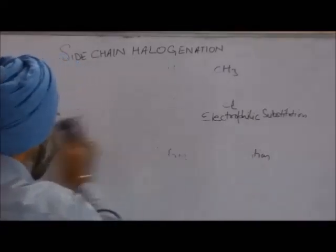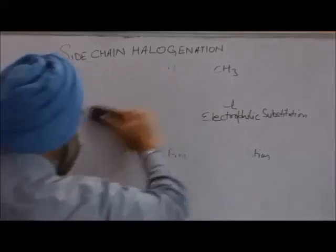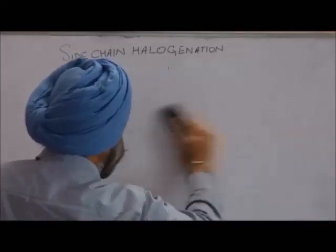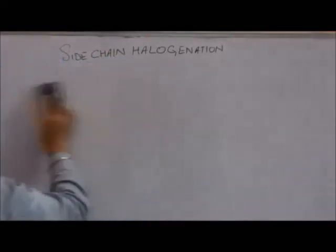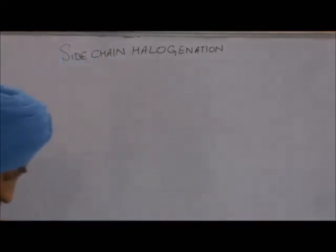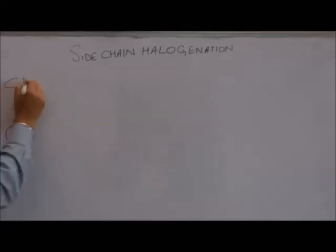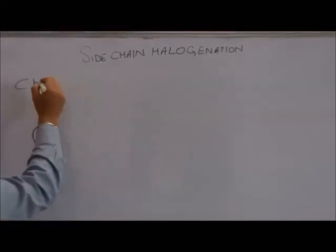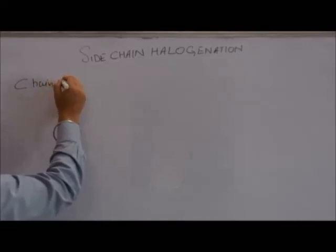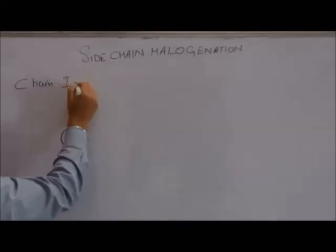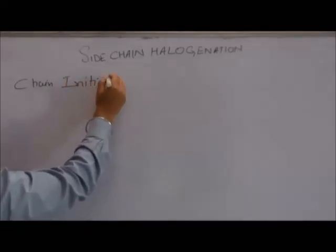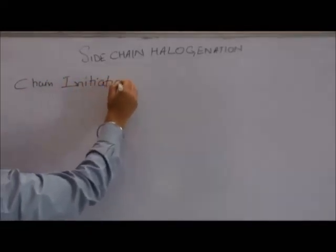The first step is the chain initiation step. What happens in the chain initiation step? In the chain initiation step, a free radical is generated.